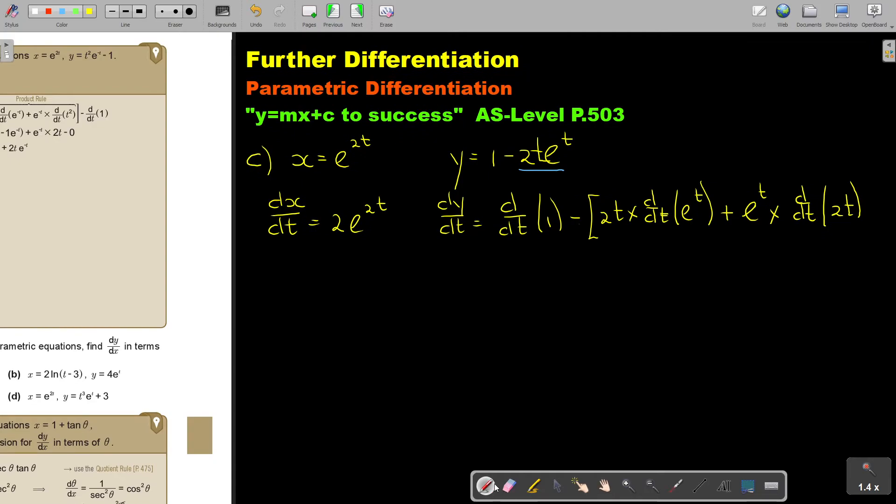A little bit still more. So basically, if this one is just becoming zero. Please don't forget that bracket first. So this is 2t, multiply, and of course it's just 1. It's just e to the power of t.